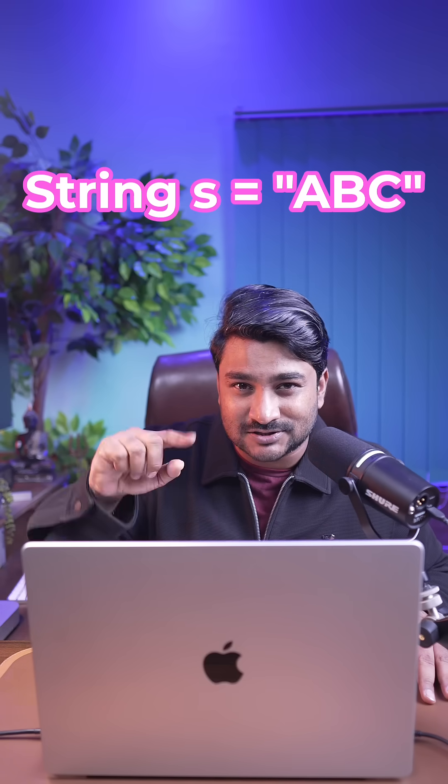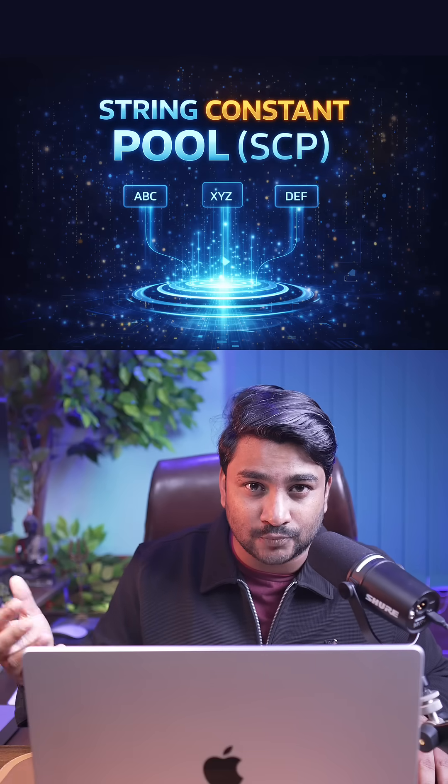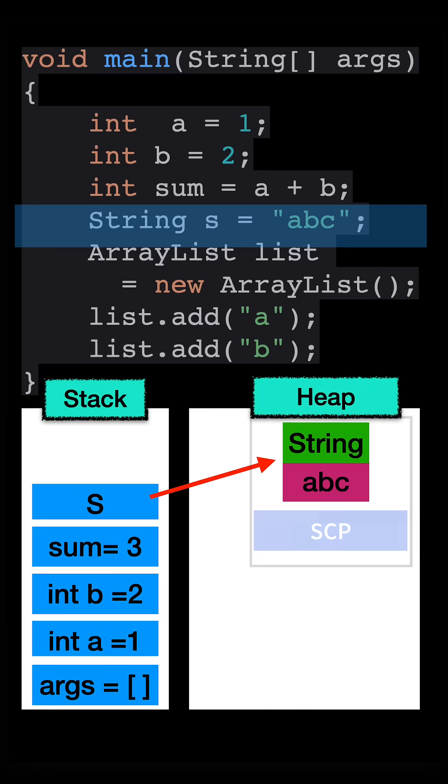Hey, important update. This string literals, this double quote things actually goes to something called string constant pool or SCP. But no worries, this SCP is also part of heap memory. Now let's go to the next line.